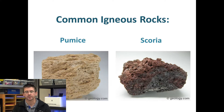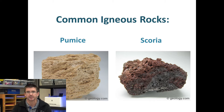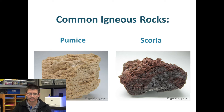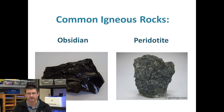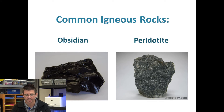Pumice and scoria are examples of igneous rocks that have air pockets in them. When we look at a sample of these, we can actually see the holes where the gases came out during the cooling process. Obsidian and peridotite are also examples of an intrusive and extrusive combination — obsidian being the smooth, extrusively formed igneous rock, and peridotite being the intrusive rock with mineral crystals inside it.